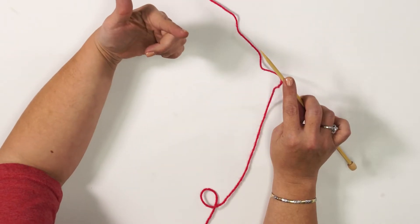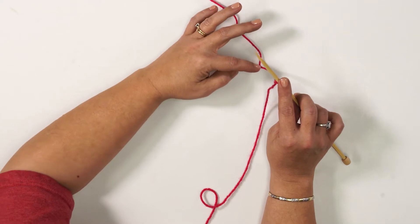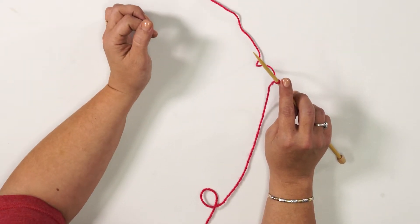Hold the needle with the slipknot in your dominant hand and let the ends drop. The tail end should be closest to you.